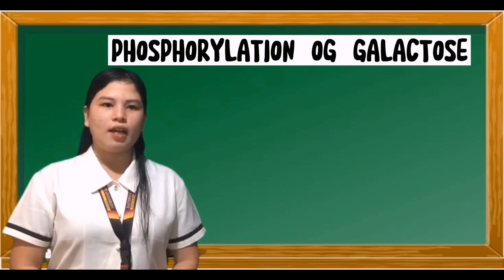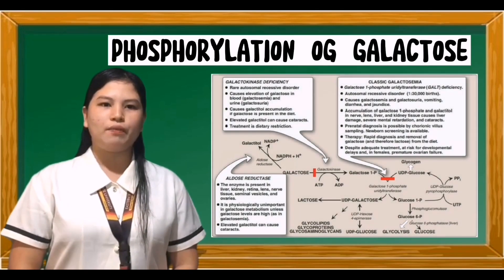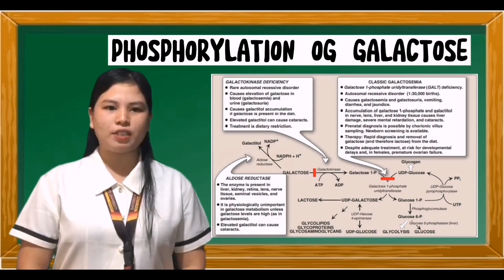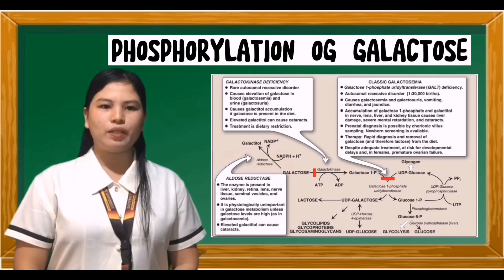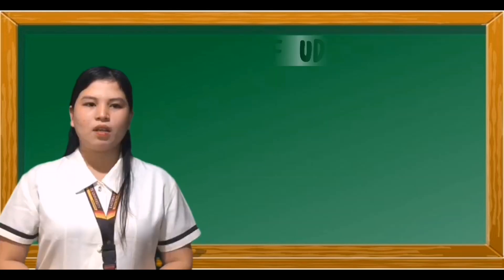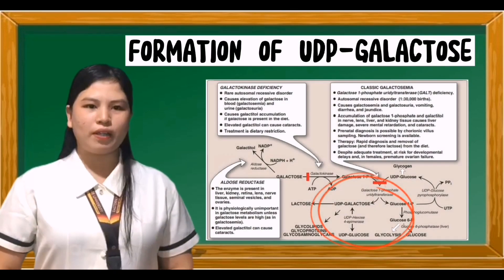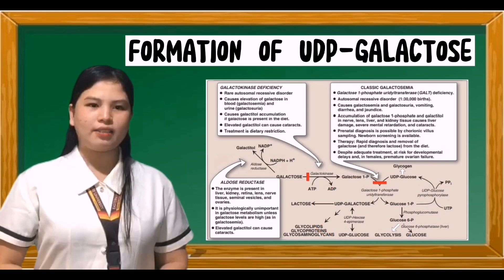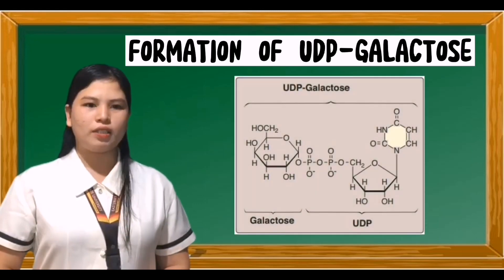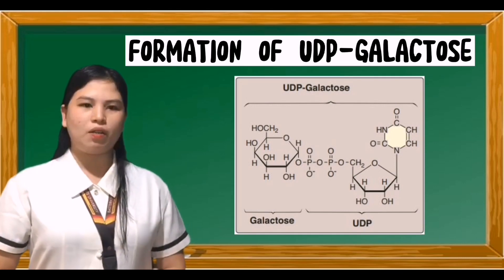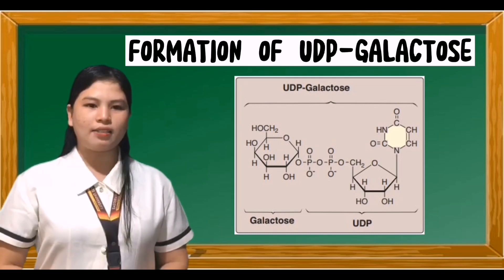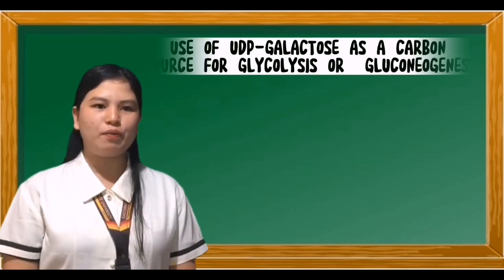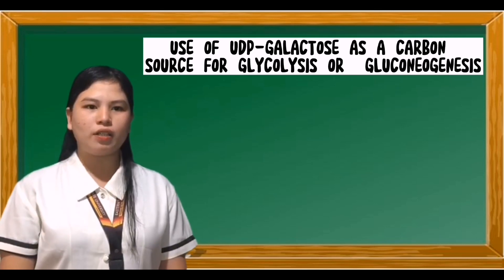Like fructose, galactose must be phosphorylated before it can be further metabolized. Most tissues have a specific enzyme for this purpose — galactokinase — which produces galactose 1-phosphate; as with other kinases, ATP is the phosphate donor. Galactose 1-phosphate cannot enter the glycolytic pathway unless it is first converted to UDP-galactose. This occurs in an exchange reaction in which UDP-glucose reacts with galactose 1-phosphate, producing UDP-galactose and glucose 1-phosphate. The enzyme that catalyzes this reaction is galactose 1-phosphate uridylyl transferase (GALT).